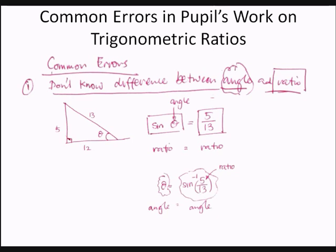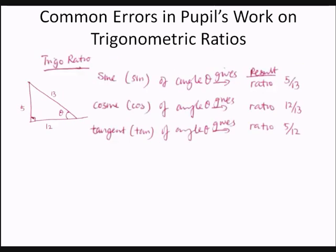The angle theta would be equal to the inverse sine of the ratio 5 over 13. Theta is an angle, and inverse sine of 5 over 13 is also an angle. The trigonometric ratio sine of angle theta gives the ratio 5 over 13, and the cosine of angle theta gives the ratio 12 over 13.